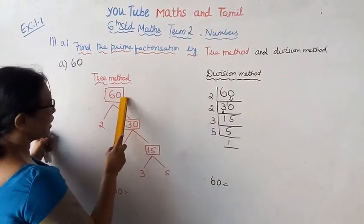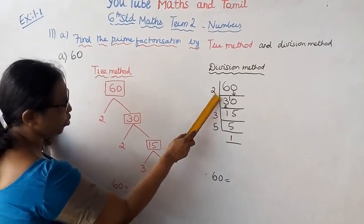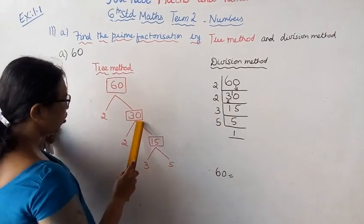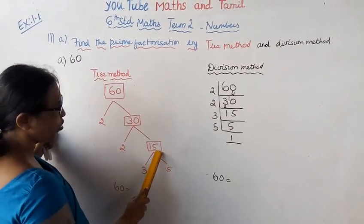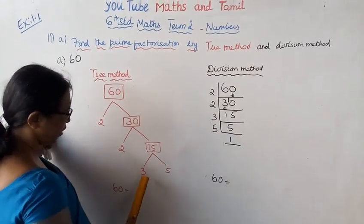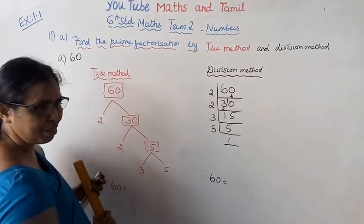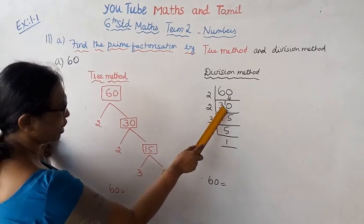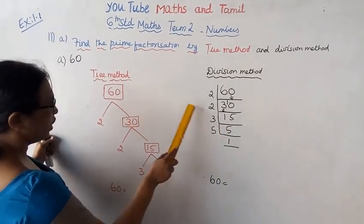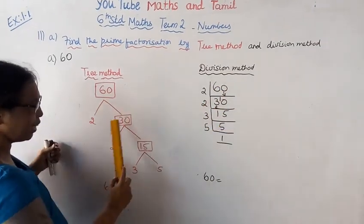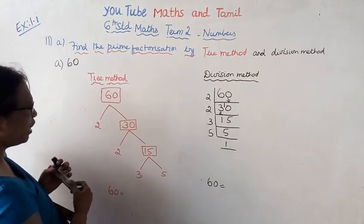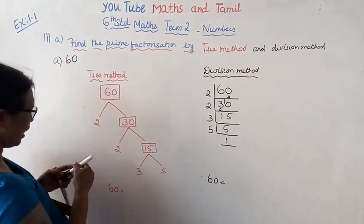For 60: two into 30, 30 two into 15, 15 — three into five. So: 2 into 30, 2 into 15, 3 into 5. That is the tree method of the division method reporting. The tree method is easy.